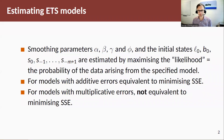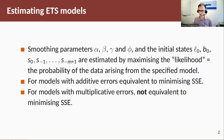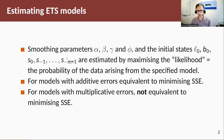Let's start with estimating the models. In the most general form we have three smoothing coefficients and also the dampening parameter. We also need to estimate initial states for each state, because these relationships are recursive — hence these processes need to start from somewhere. So we have a whole set of initial values: one for the level, one for the trend, and m for the seasonal components.